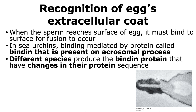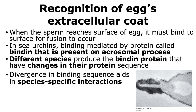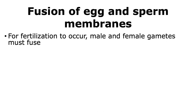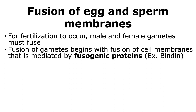Different species produce bindin with slightly different protein sequences, and this divergence aids in species-specific interactions. Sperm attraction and activation occur in a species-specific manner, and recognition of the egg's extracellular coat can also be done in a species-specific manner through proteins like bindin. Eggs have bindin receptors that interact with the bindin present on the sperm. For fertilization to occur, the male and female gametes must fuse — their membranes have to fuse together. This membrane fusion is mediated by proteins called fusogenic proteins, and bindin is an example of a fusogenic protein.